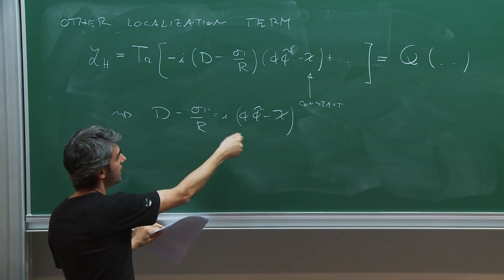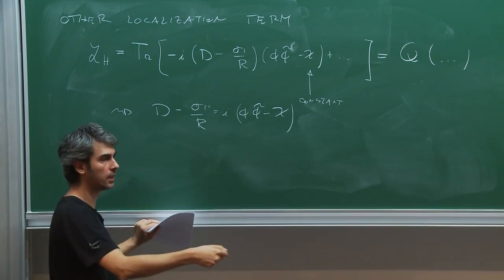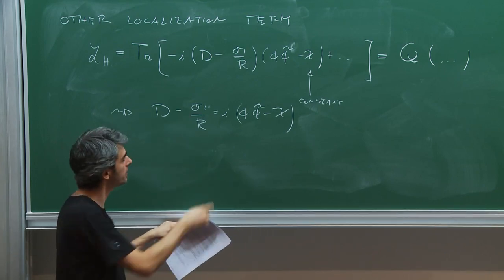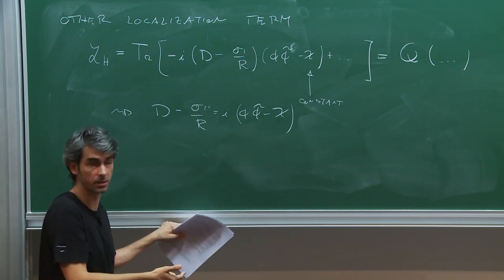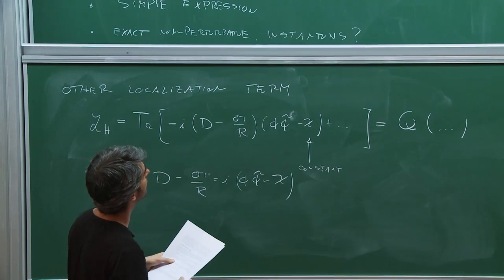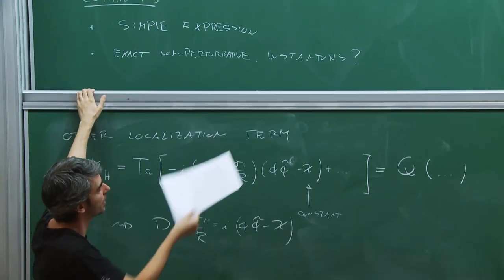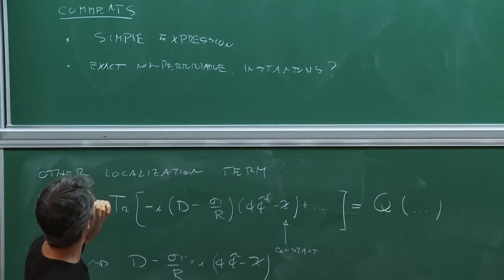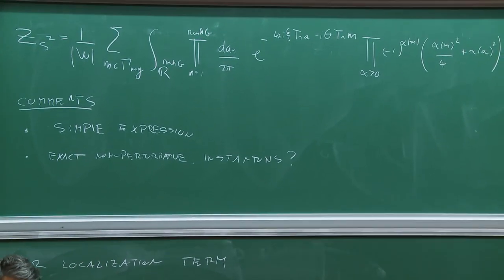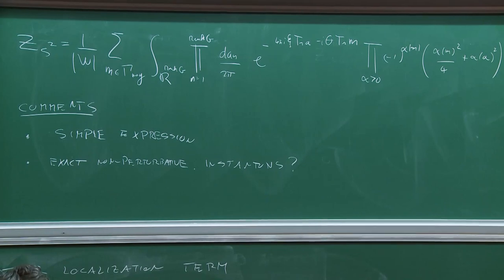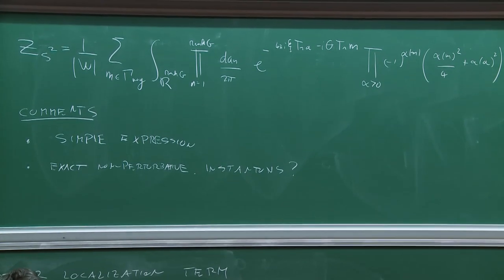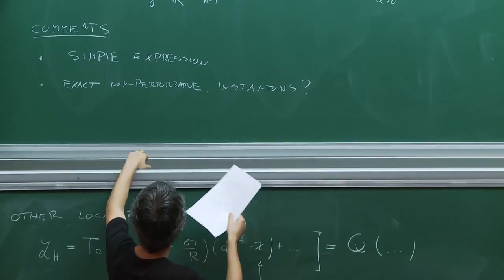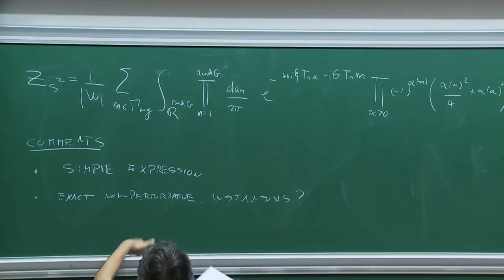The configuration that matters now are vortices. By contrast, the configuration contributing in the previous formula looked more like a Coulomb branch — because we integrate over sigma, the scalar in the vector multiplet, and turning it on breaks the gauge group to the Cartan, which is what happens on the Coulomb branch. So the previous formula is sometimes called the Coulomb branch localization formula. Here instead we seem to localize to something different.